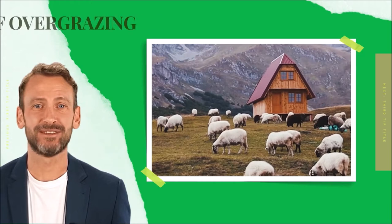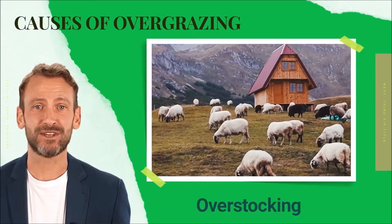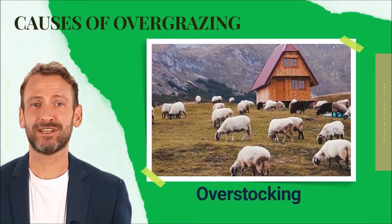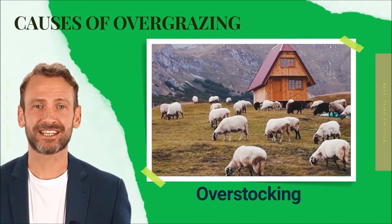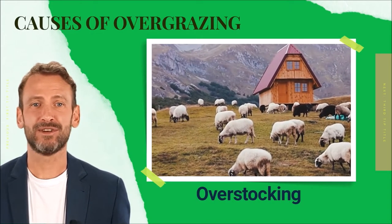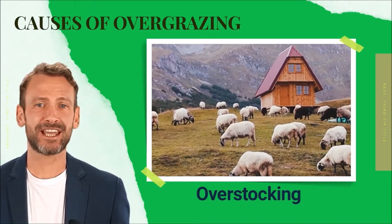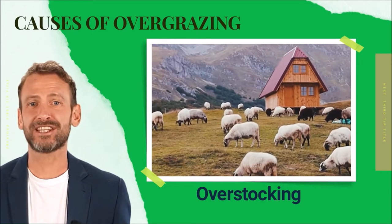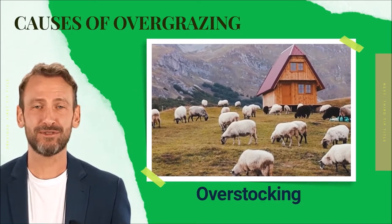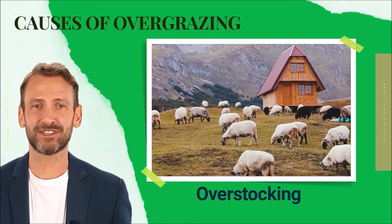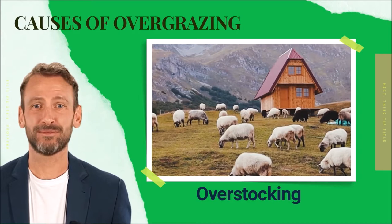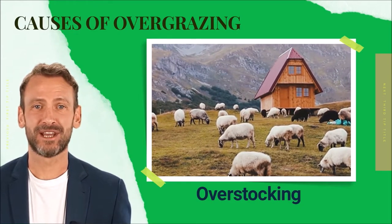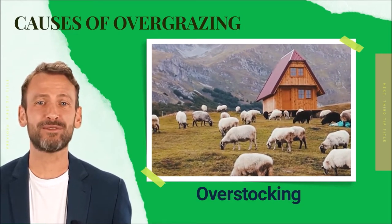Overstocking occurs when livestock are kept in a grazing land that cannot support their grazing capacity. When there are too many grazers in one area, they tend to graze excessively to the detriment of the vegetation cover. Repeated grazing limits pasture regrowth. With time, the land will be left bare, thereby causing other serious environmental problems.